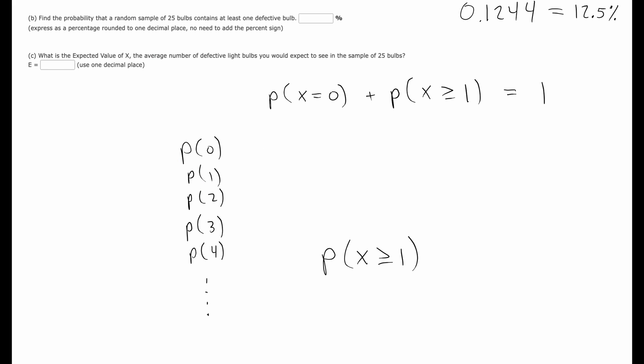you'd be talking about all these probabilities all the way up through P of 25. So I'm saying that this represents the probability of X being greater than or equal to one, so this is at least one. And this is the chance of getting none. So my point is to make things easier here for this particular question.